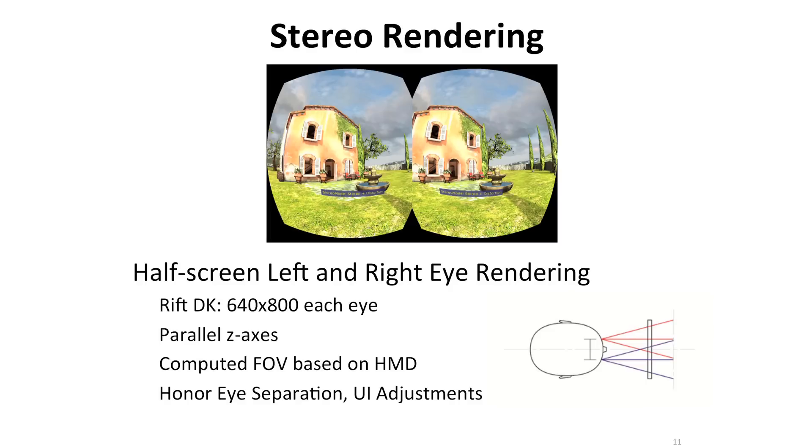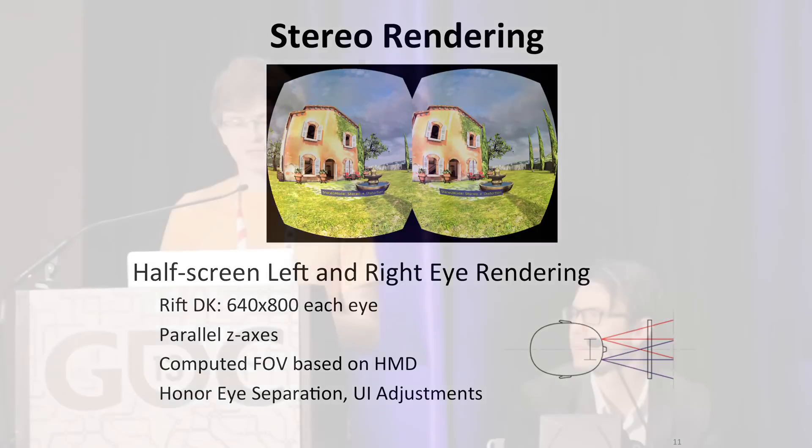Most of you are familiar with stereo rendering for TVs; it's a little different for VR, but in a way it's simpler. There are two images for left and right eye, and we do a number of adjustments for it to work. In the current Rift, the resolution is 640 by 800 for each eye. In an HMD you set up projection with a parallel V-axis — no cross-axis effect. You have two cameras at parallel angles, render the scene, and adjust for each user's eyes.